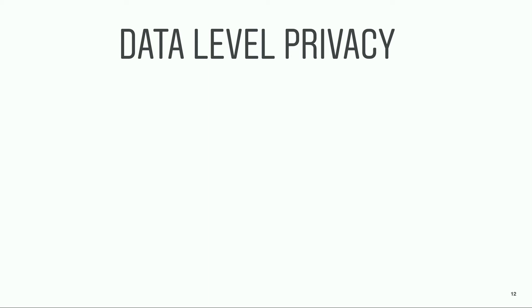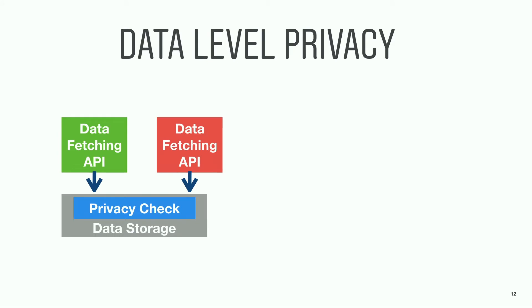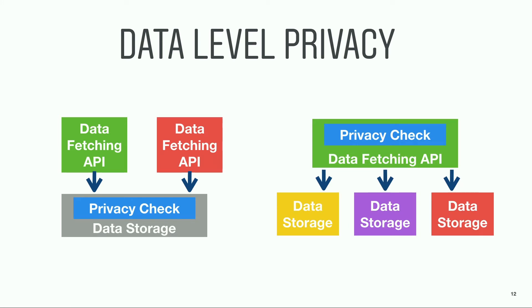Data level is a generic term — it includes the data storage, the caching layer, and the API. So where should privacy live in the data level? It could live all the way at the data storage, which protects all access to the DB and will be API invariant. Or it could live at the API level to support multiple data storages. In current days, we probably have multiple data fetching APIs for different languages, and they all need to be privacy-aware. We took the second approach for the potential to support multiple data storages.